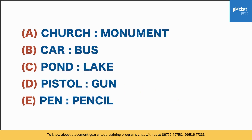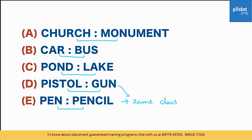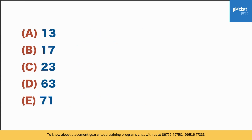Now we have a question with two-word pairs. We need to find the relation in each case and see which one does not match. The pairs are: pen and pencil, pistol and gun, pond and lake, car and bus, church and monument. Pencil and pen belong to the same class — used for writing. Pistol and gun are both used for shooting. Pond and lake are both water bodies. Car and bus are both transport. But church and monument — is a church a monument? No. Is a monument a church? No. Therefore church and monument is the odd one out.